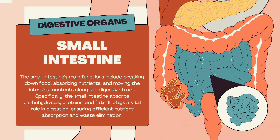The small intestine's main functions include breaking down food, absorbing nutrients, and moving the intestinal contents along the digestive tract. Specifically, the small intestine absorbs carbohydrates, proteins, and fats. It plays a vital role in digestion, ensuring efficient nutrient absorption and waste elimination.